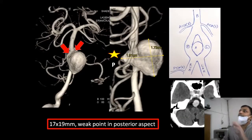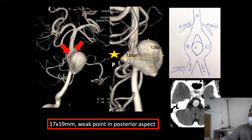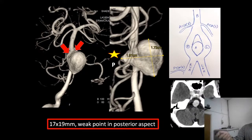On the 3D reconstructed images, we can clearly see two limbs associated with this aneurysm. Normally the basilar artery is a single channel, but here we see two limbs — this is called fenestration, a well-known term in the literature. On the lateral view, the aneurysm measures 17 by 19 mm. On the posterior aspect, there is a triangular outpouching which is more prone to rupture.